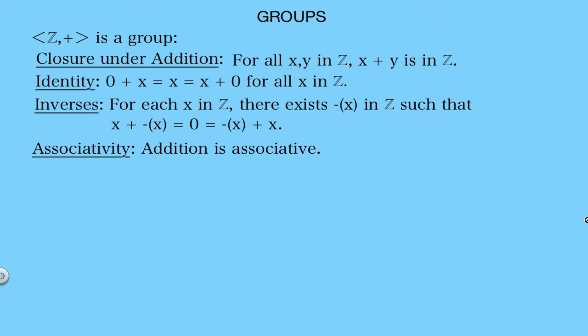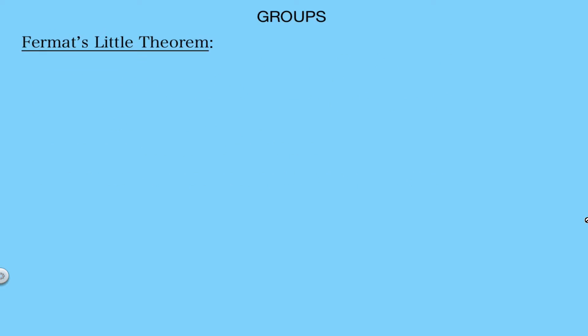So the set of integers with addition qualifies as a group. And to go one step further, since we know addition is also commutative, we can actually say that this is an abelian group. And this was really the first group mathematicians studied, but definitely not the last.